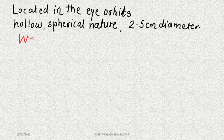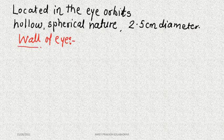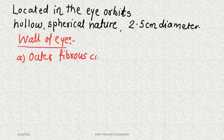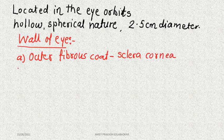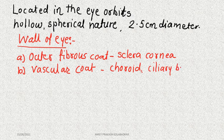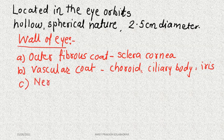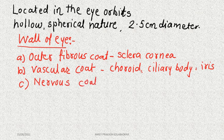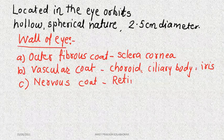The wall of the eye shows presence of 3 different coats or 3 different layers. The outer is the fibrous coat, made up of two structures: one is called sclera and the other is cornea. The second is the vascular coat, which is middle in position, made up of three important structures: choroid, ciliary body, and iris. The innermost is the nervous coat or nervous layer, commonly known as the retina.